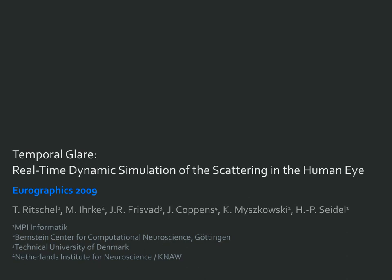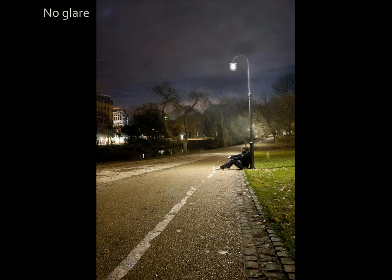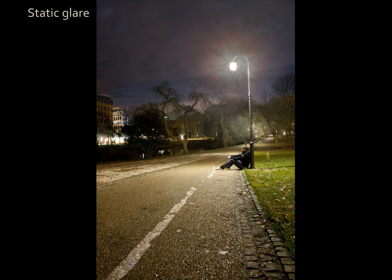Temporal glare: real-time dynamic simulation of the scattering in the human eye. Adding glare to an image can dramatically improve its perceived contrast, which was known to traditional artists for a long time and is often used in computer graphics today. Such glare has up to now been described as a static phenomenon only.